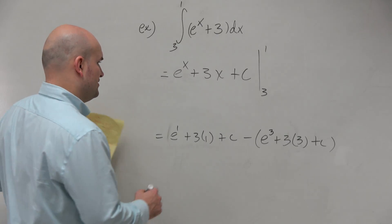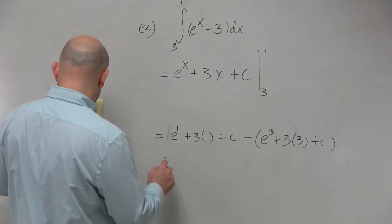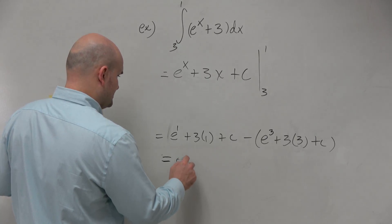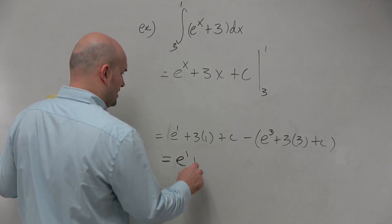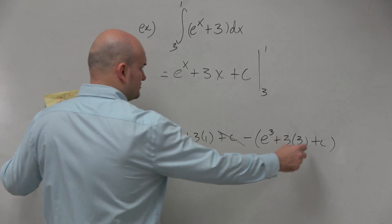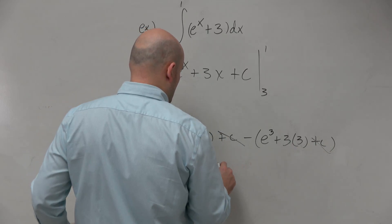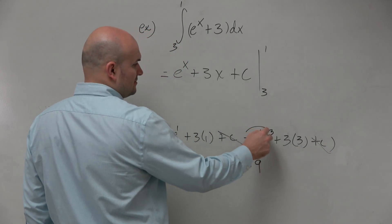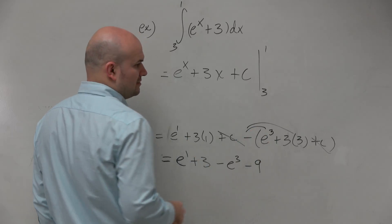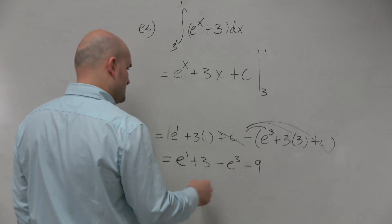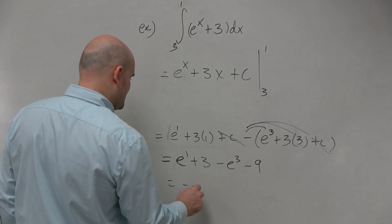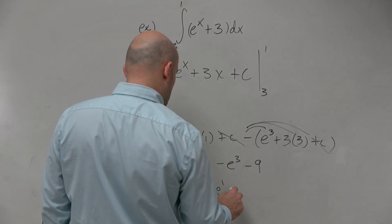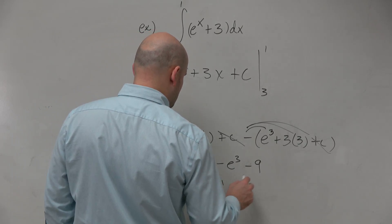Let's go ahead and figure out what we get here. So we have e to the first, plus 3, minus e cubed, minus 9. And therefore, we could rewrite this as negative e cubed plus e to the first, minus 6.